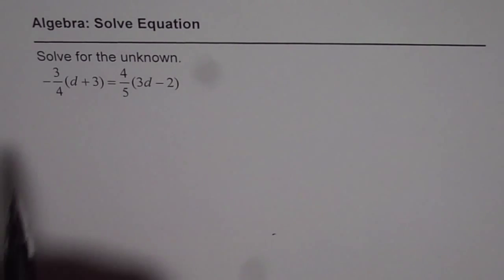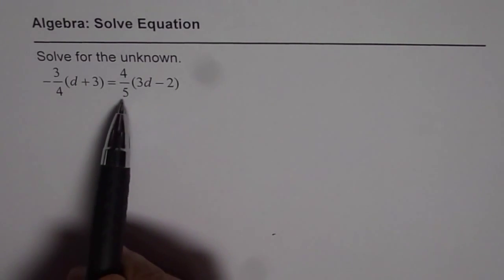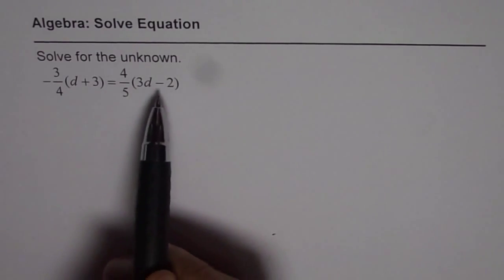To solve this equation, let us cross multiply. That means we will multiply the first term on the left side by 5 and the term on the right side by 4.